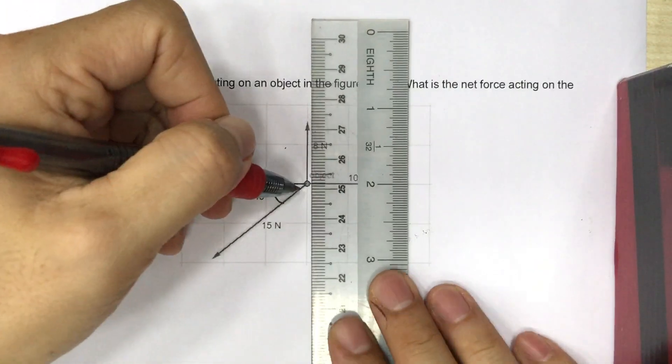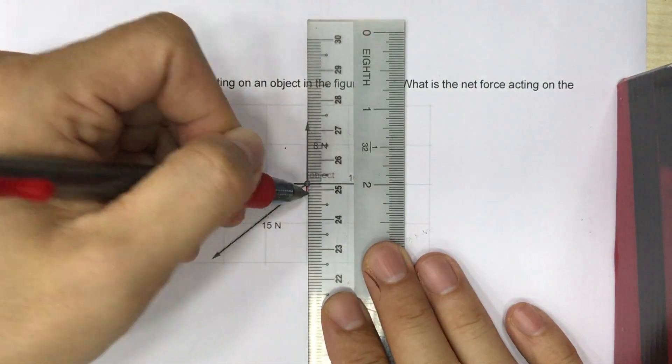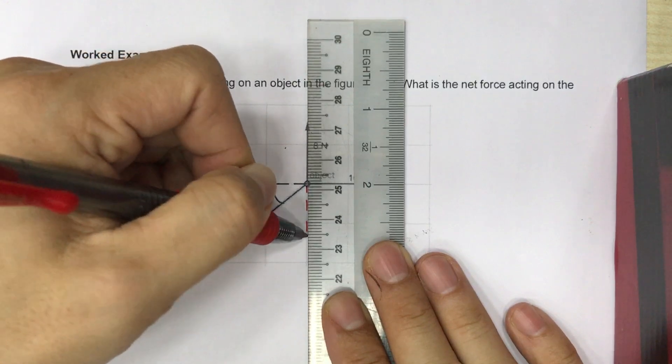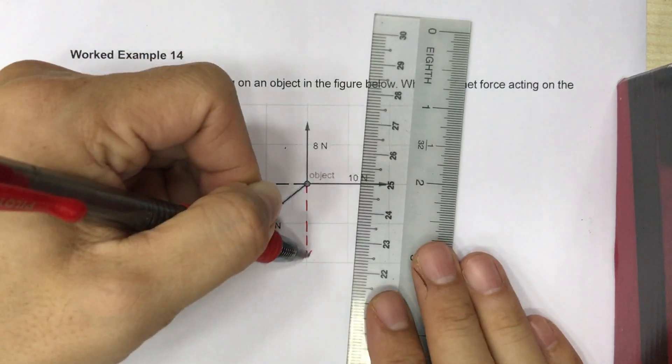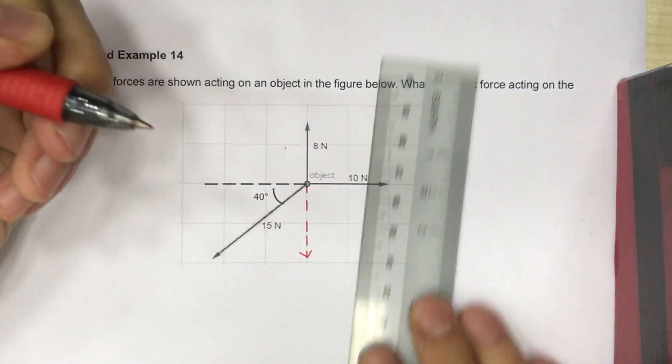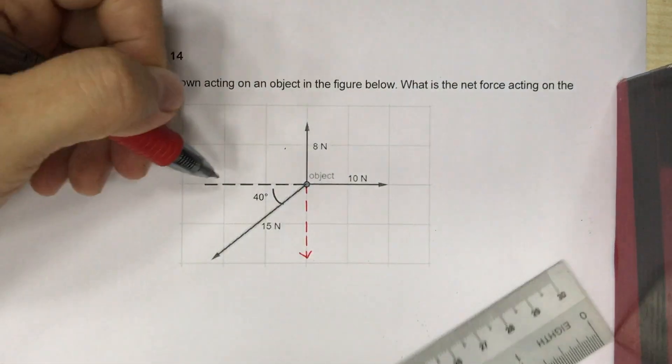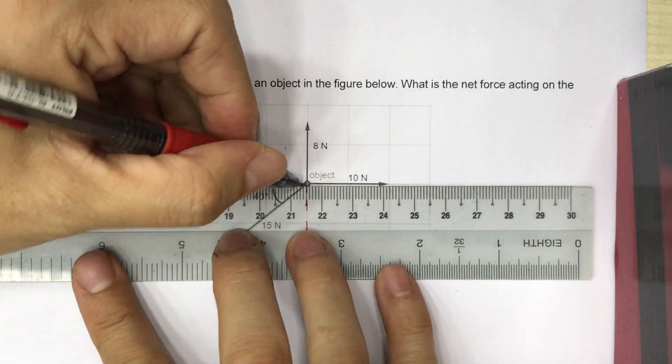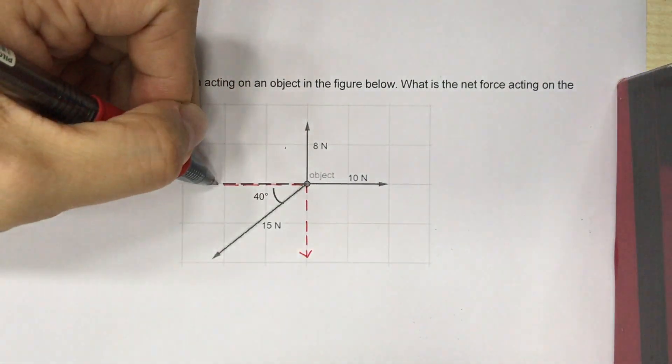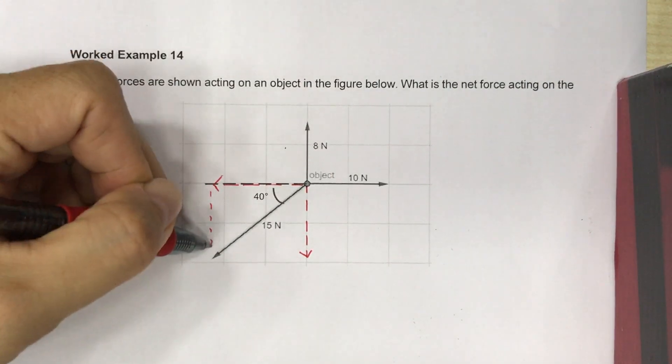So what we are going to do is draw an arrow in the vertical direction that is just equal to the vertical component of the 15N vector, and then the horizontal component that is equal to the horizontal component of the 15N vector.